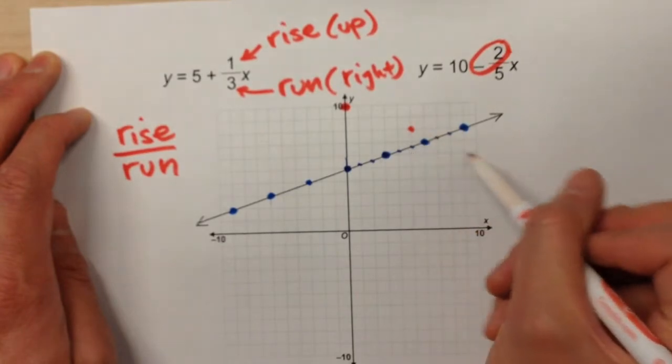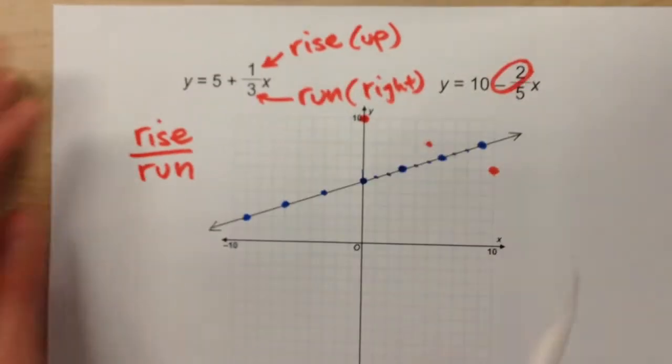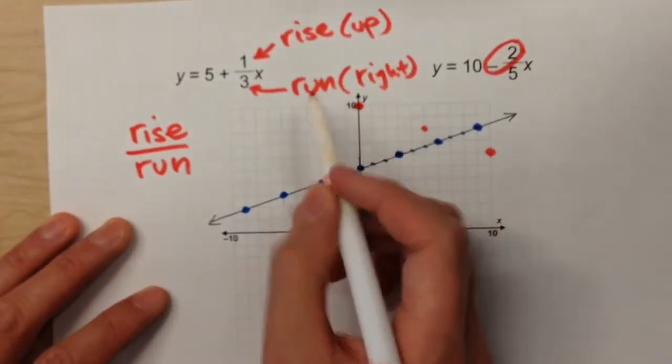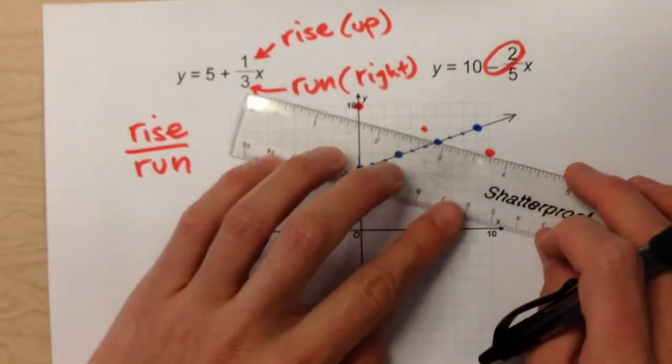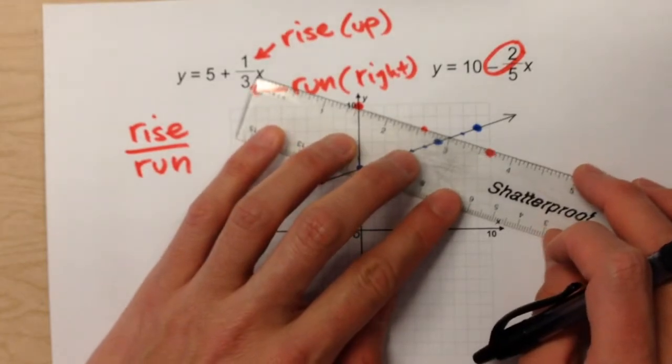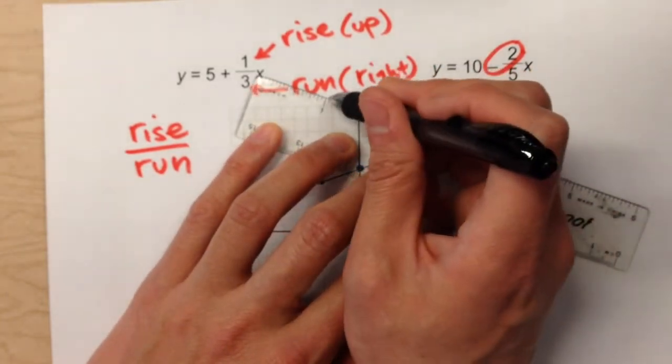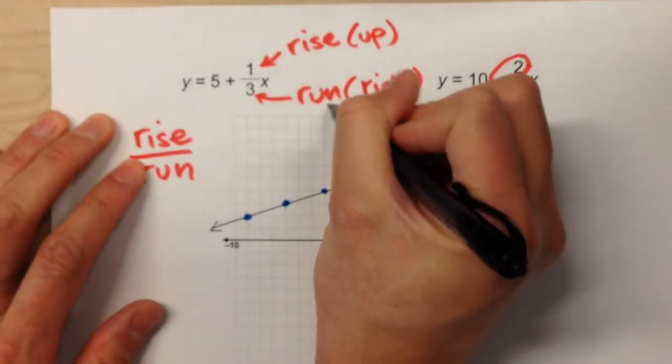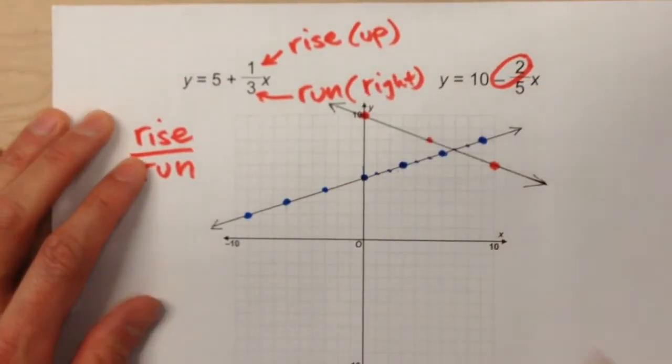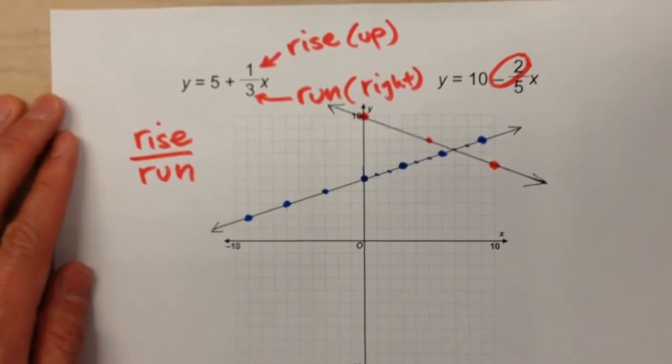Down two, right five. Well, I can't continue it the other way because it's going to run off the graph. But I'll grab my straight edge, line it up, put arrows on the ends. And there's my second graph.